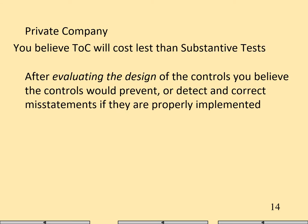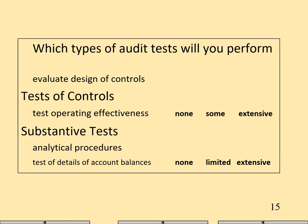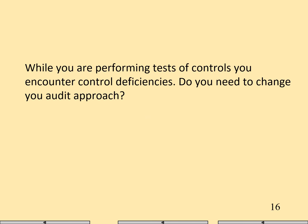Now a scenario: private company, we believe tested controls will cost less than substantive tests. After evaluating the design of the controls, you believe the controls would be effective. Therefore, we're going to preliminarily assess control risk is low and plan on taking a reduced level of control risk approach. Always evaluate the design. Extensive tested controls. Then something went wrong — while performing our tested controls, we encounter control deficiencies. So their controls aren't effective.